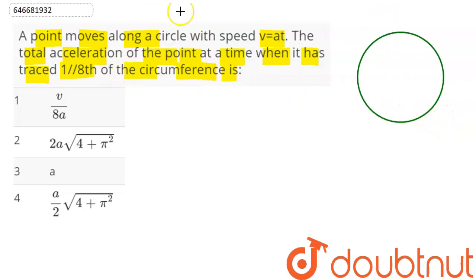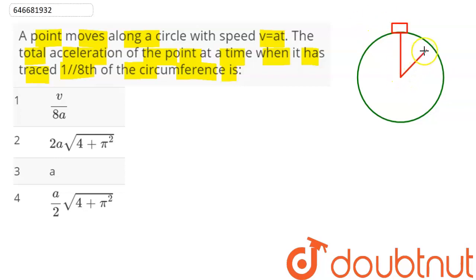Now, one-eighth of the circular track: suppose this particle starts from this point. One-eighth means half of one quadrant, which is one-fourth. So one-eighth of the circumference means the distance covered is 2πr divided by 8. At this position, suppose the particle is along this position, and we have the speed as at.